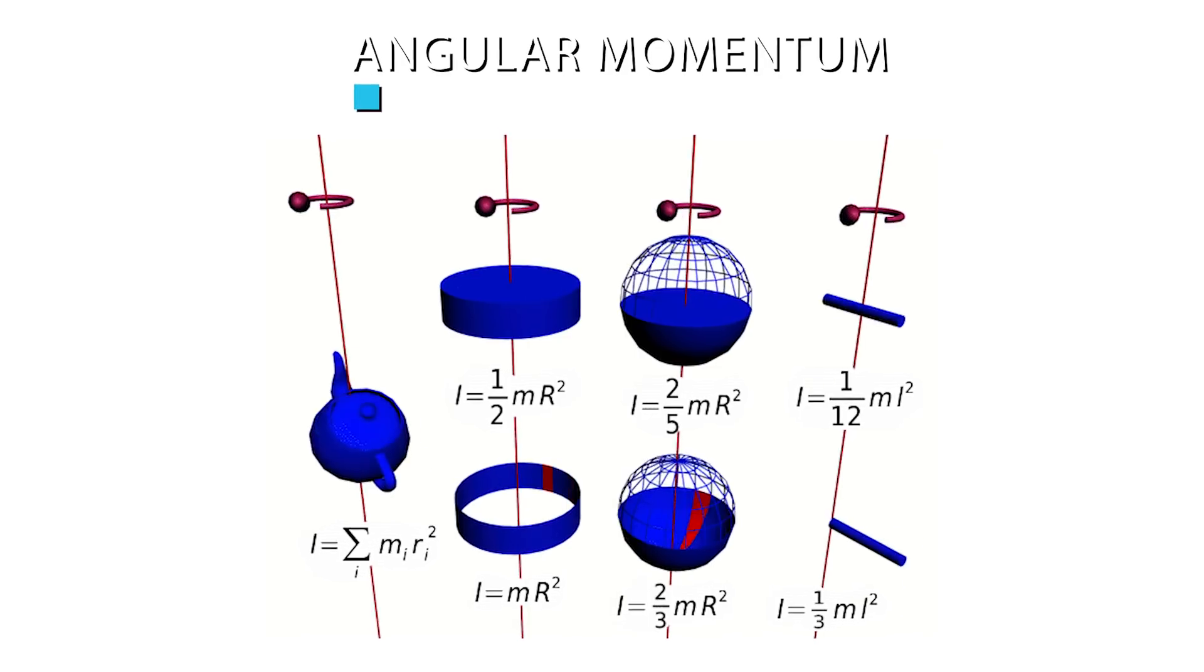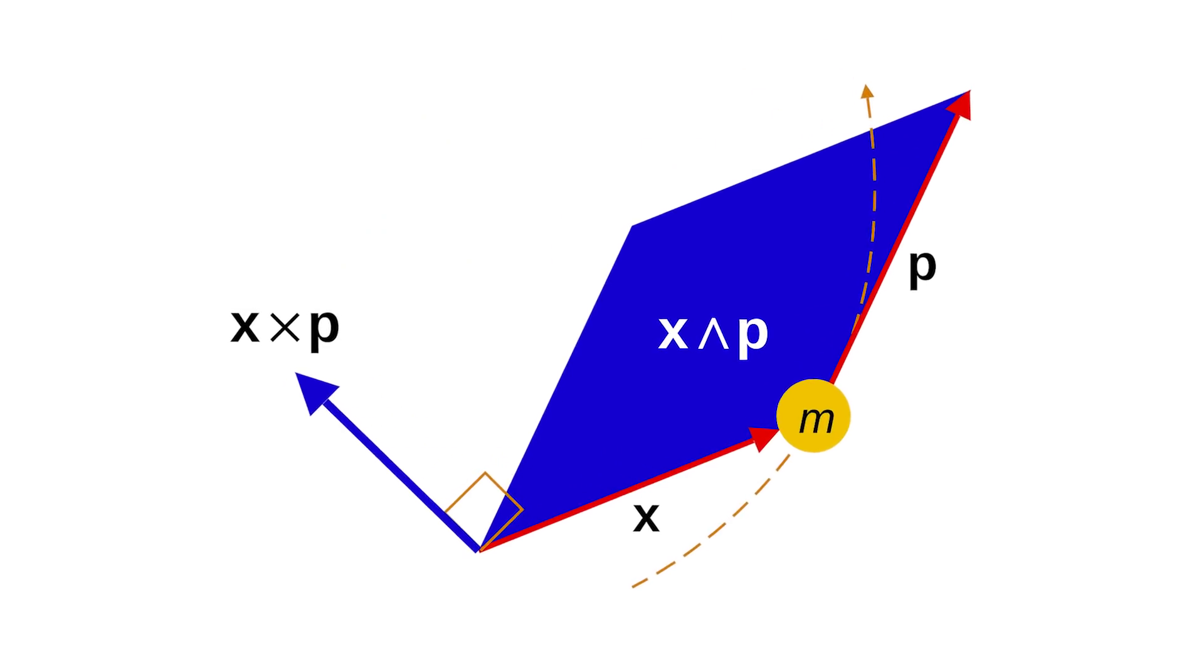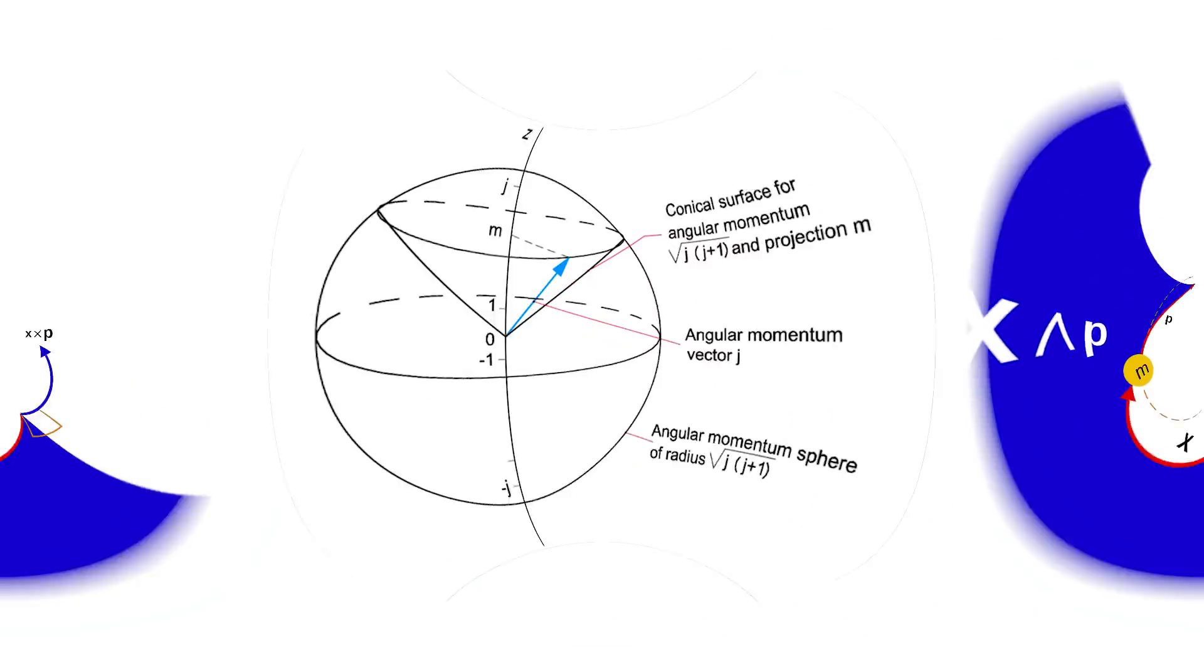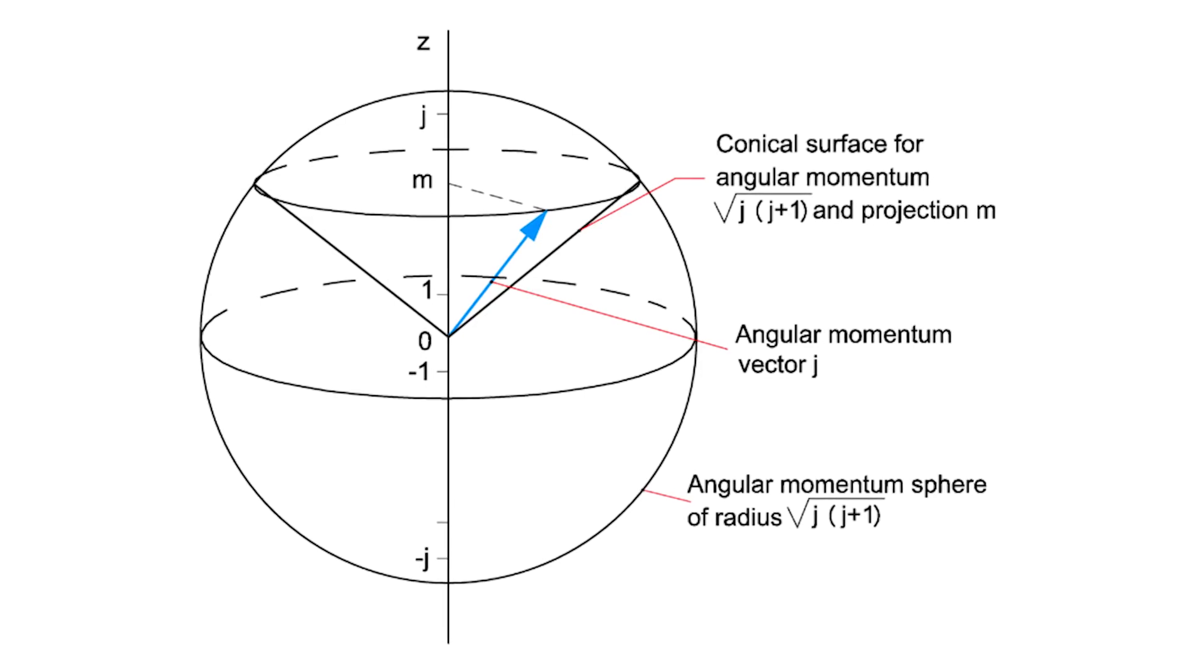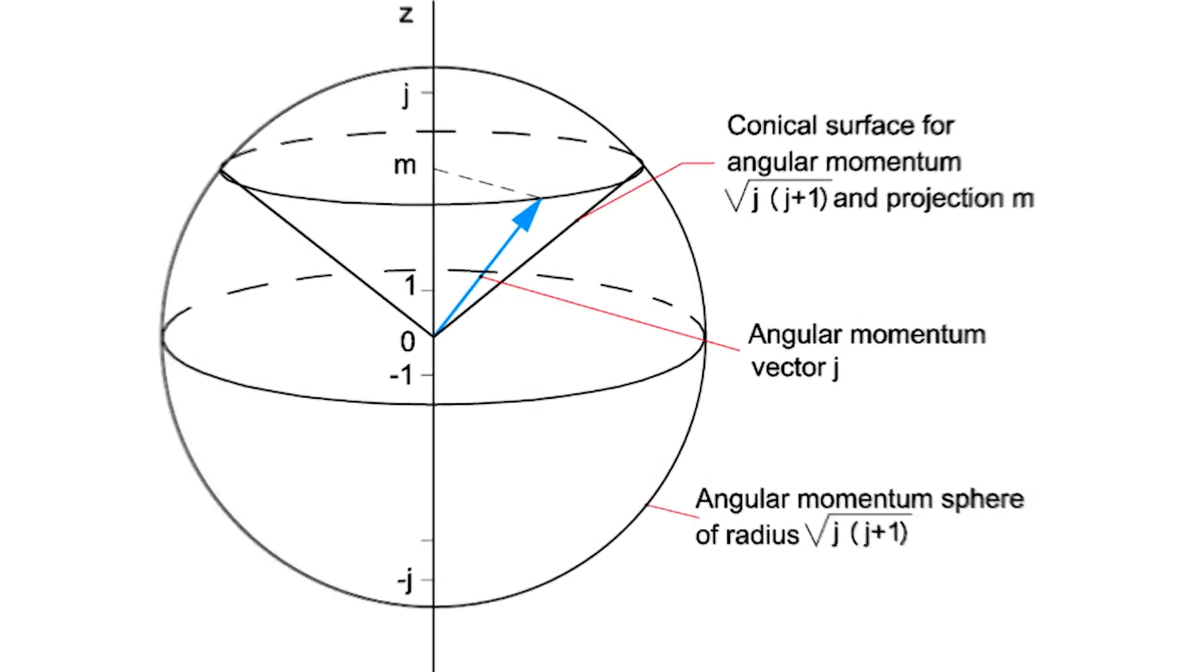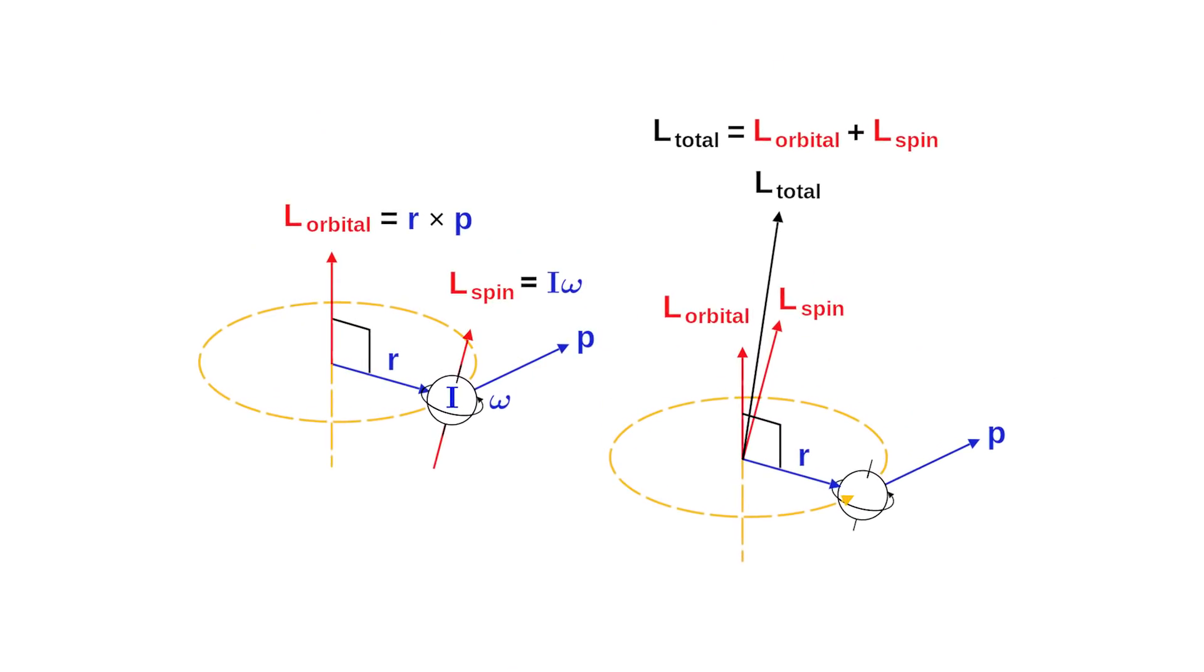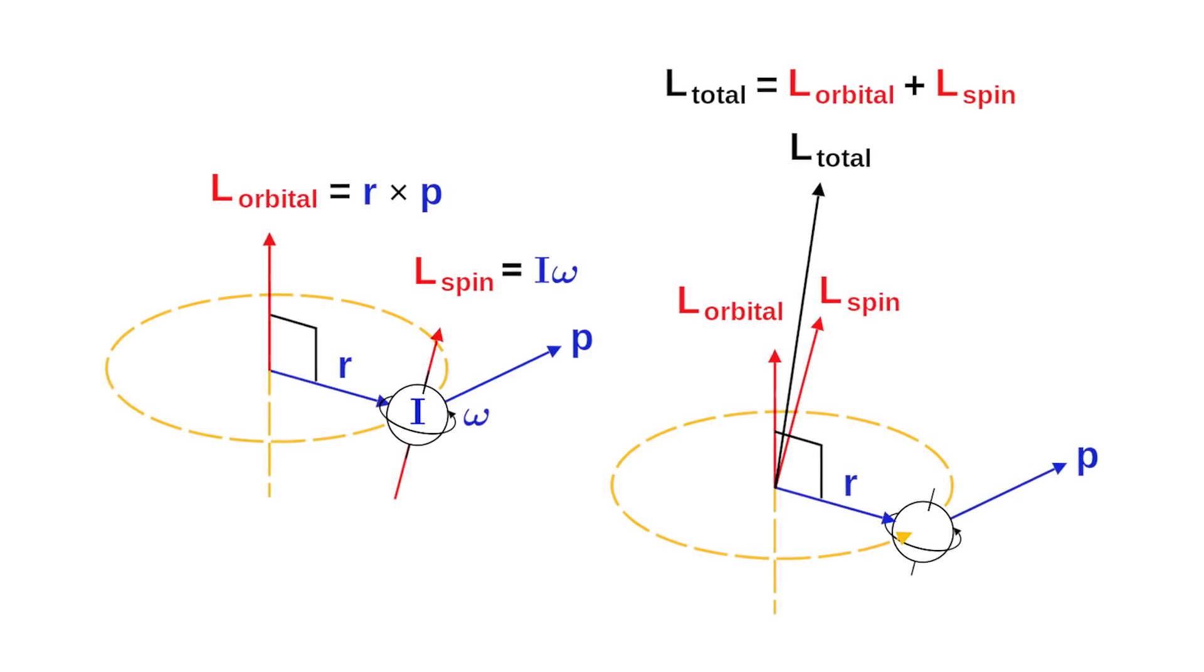So angular momentum first. If you know linear momentum, then angular momentum wouldn't be too hard to grasp. Linear momentum is the tendency of an object to move in a straight line. By that logic, we can say that angular momentum is the tendency of an object to rotate. I hope you're not lost so far. Trust me, learning this is really important in understanding the main goal of the video.